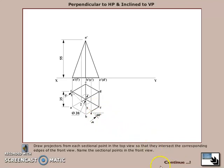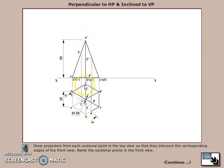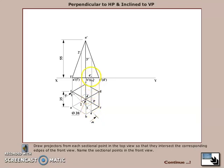Then project all section points into the front view on their corresponding edges. Point 1 is on AF, so when projected it falls on the XY line. Point 2 is on AO, so project it directly to A'O'. Point 3 is on BO — since BO is perpendicular to the XY line, it cannot be directly transferred to B'O'. Instead, rotate this point to CO or AO, project it to C'O', and then transfer it horizontally to B'O'. The last point 4 is on BC, so transfer it to B'C'.